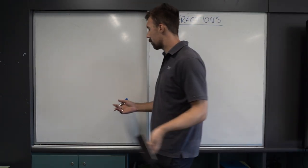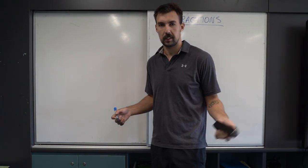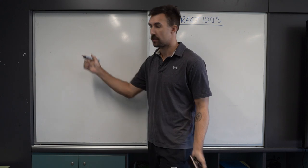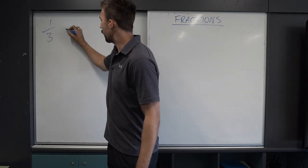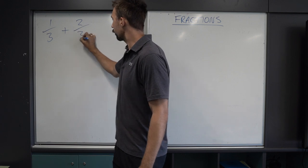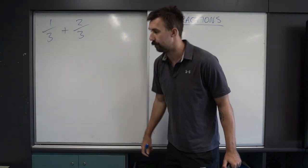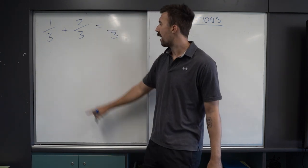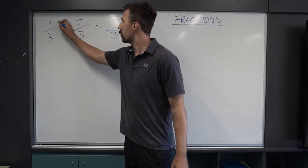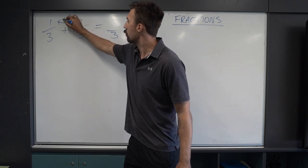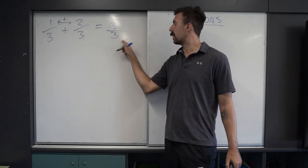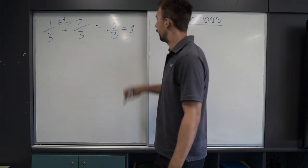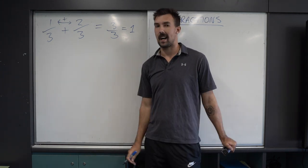Let's play with fractions. We'll start simply by adding fractions. Going over the notes: when we have 1 third plus 2 thirds, if the denominator is the same, it stays the same. We can just add the two numerators together. 1 plus 2 is 3. And if we have 3 out of 3, it is also known as a whole number — 1. So that's when the denominators are the same.